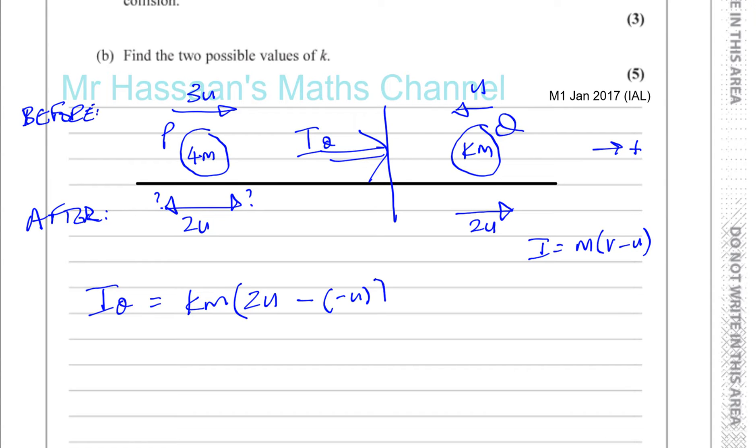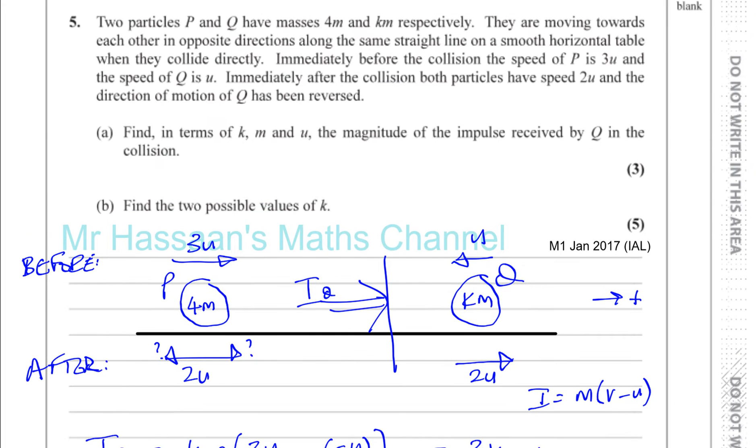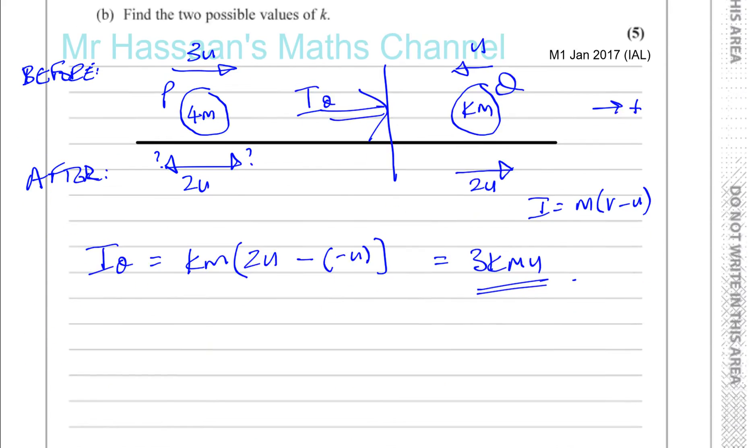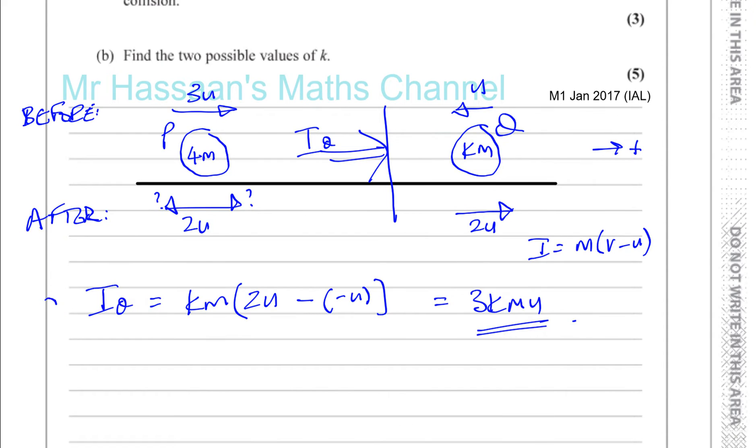You end up with 2U plus U, which is 3U times KM, so you've got 3KMU. And that's the answer, the magnitude of the impulse received by Q in terms of KM and U. That's part A done.